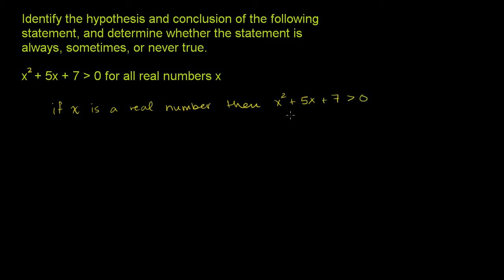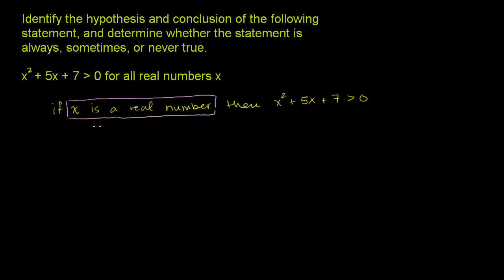When you write it as an if-then statement, it becomes a lot easier to identify the hypothesis and the conclusion. The hypothesis is what the if part is asserting — x is a real number. That's the hypothesis, sometimes called the antecedent.